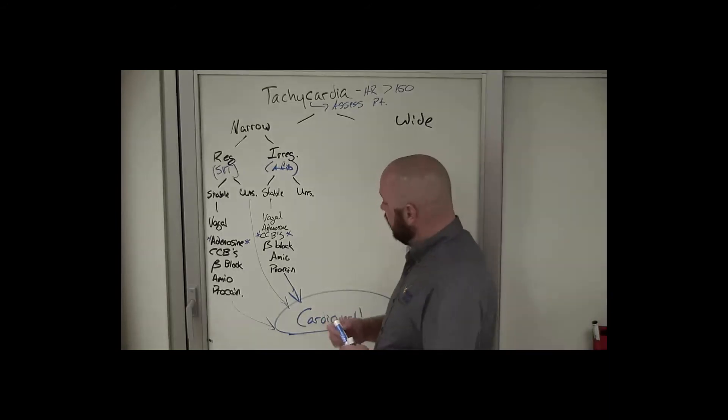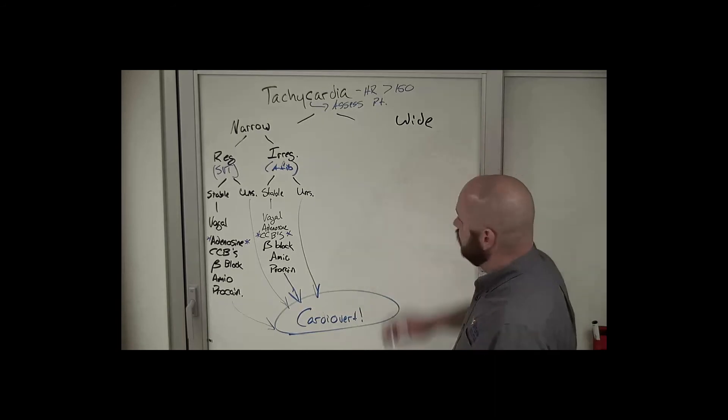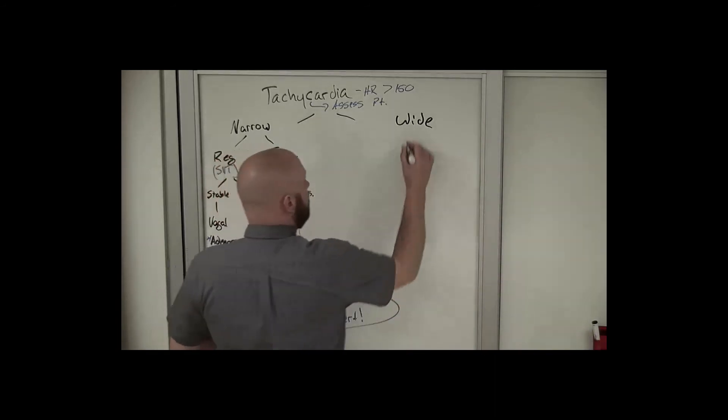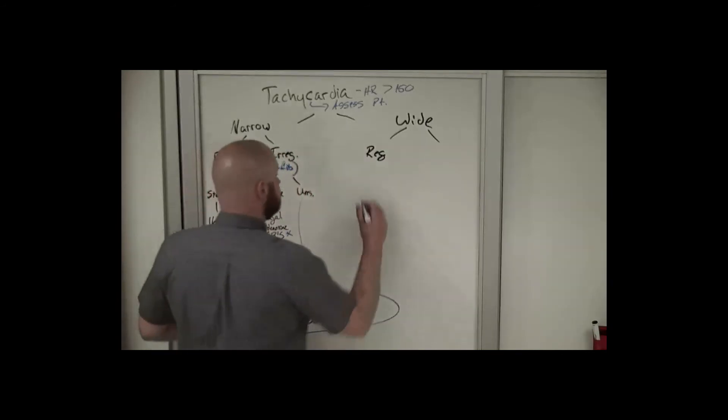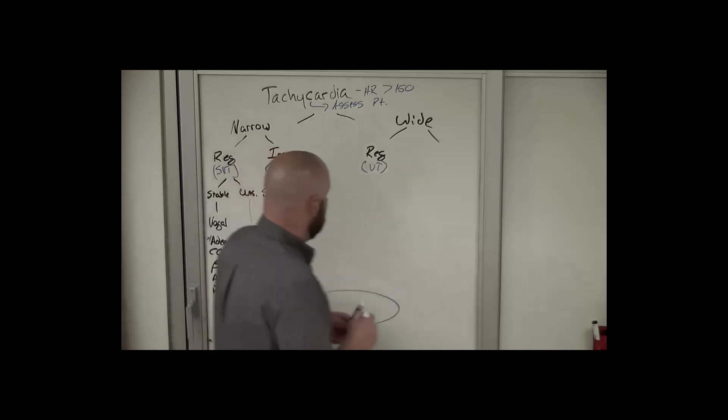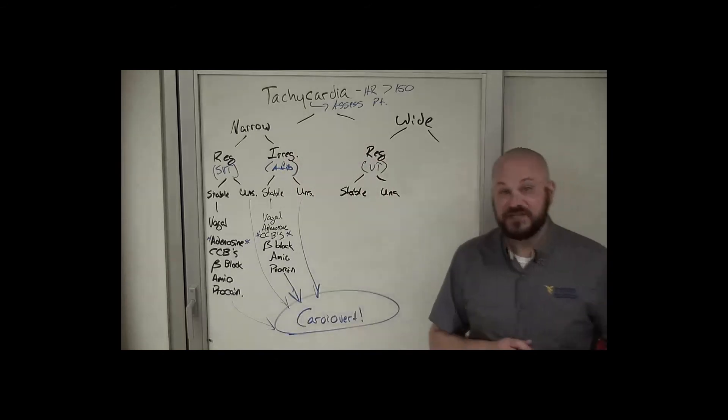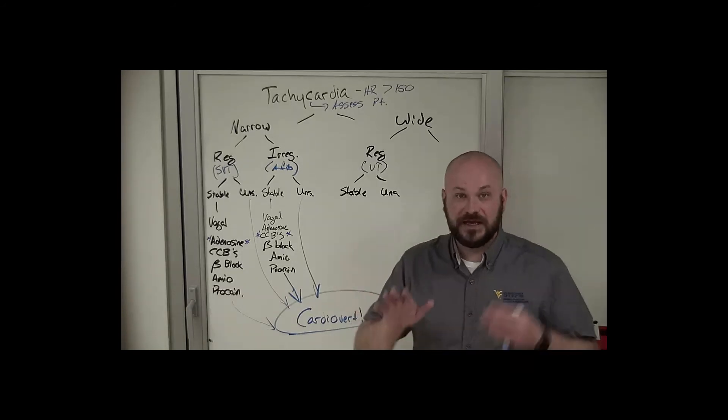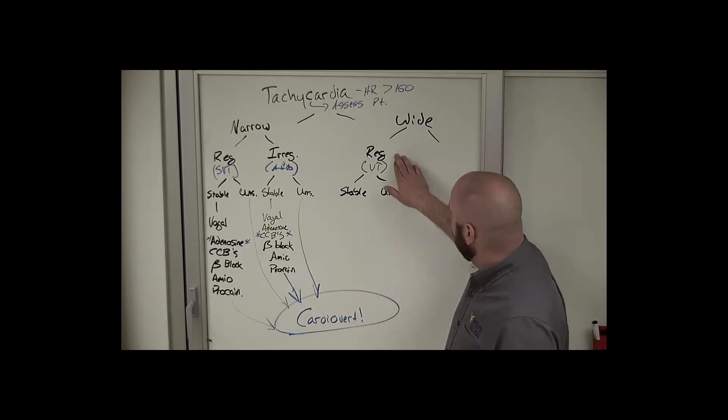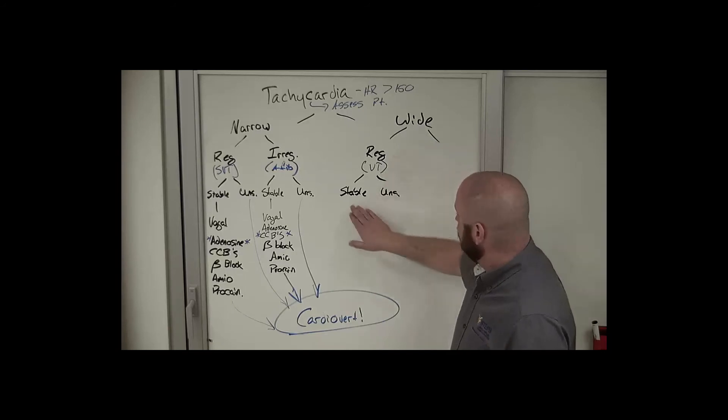All right, so now let's talk about some wide complex rhythms. Heart rate greater than 150, wide complex rhythm, regular. Classically this is VTach. So stable versus unstable VTach. Now for the purposes of this algorithm, we're assuming the patient has a pulse. If the patient doesn't have a pulse, we're not in the tachycardic algorithm, we're now in the VFib VTach algorithm. If the patient doesn't have a pulse, they immediately need defibrillated and CPR started. So in this case, wide, regular, and stable, we're talking about stable VTach. Now you can still do the vagal, adenosine, and all of those things. Know that they may not work.